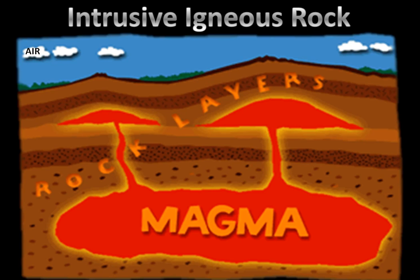Molten rock is melted rock and exists in two forms. If it is beneath Earth's surface, it's going to be called magma. If the molten rock pops out and covers the Earth's surface where it's exposed to things like air, it's going to be known as lava. Intrusive rocks are only dealing with magma, not lava, so we can get rid of the lava part.